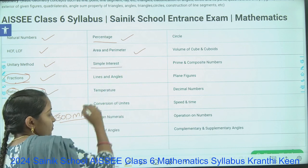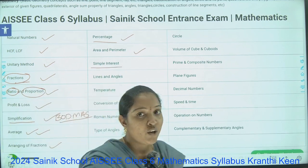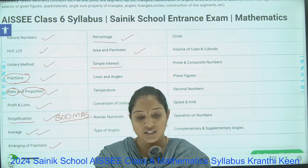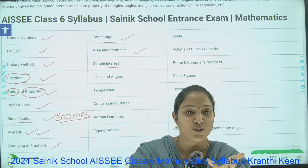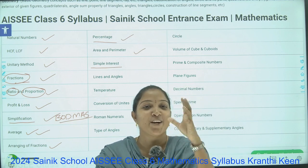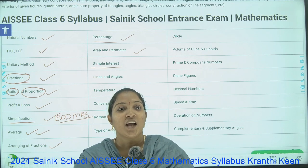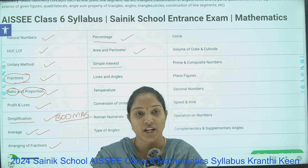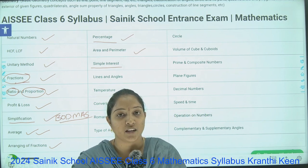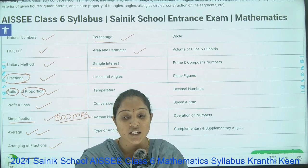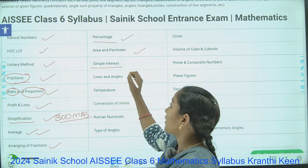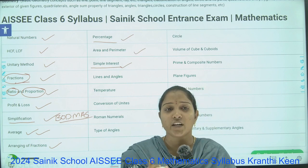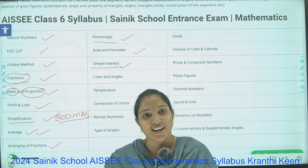Next is Simple Interest. Usually when you go to a bank and deposit some amount — mostly your parents deposit money — they get some extra money on that deposit, and that extra amount is called Simple Interest. How it is calculated, we will discuss in the later classes.